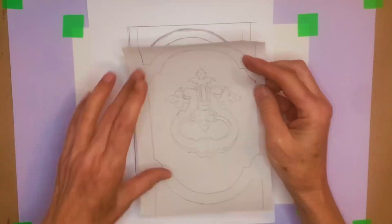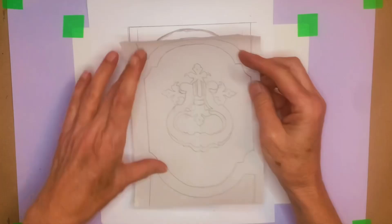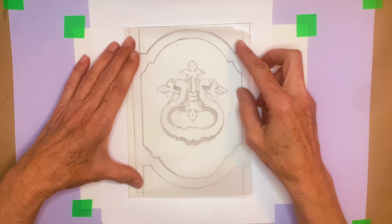Simplified, collagraph is a printmaking process in which materials are applied to a rigid surface such as cardboard, mat board, or wood. This is referred to as a plate.